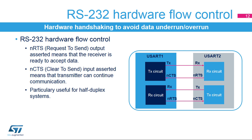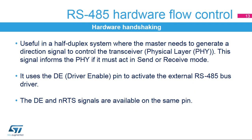In RS-232 communication, it is possible to control the serial data flow between two devices by using the N-CTS input and N-RTS output. These two lines allow the receiver and transmitter to alert each other of their state, preventing dropped bytes or conflicts in half-duplex communication. Both signals are active low. For serial half-duplex communication protocols like RS-485, the master needs to generate a direction signal to control the transceiver. This signal informs the physical layer if it must act in transmit or receive mode. In RS-485 mode, the driver-enabled pin is used to activate the external transceiver control. DE shares the pin with N-RTS.